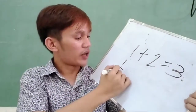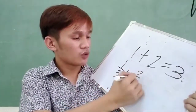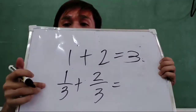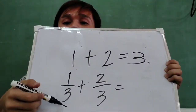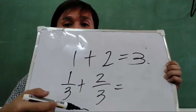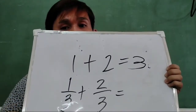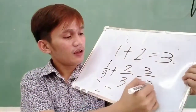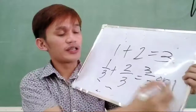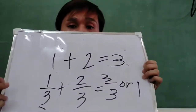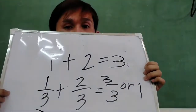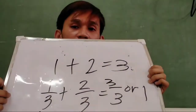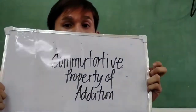So another example, we have 1 third plus 2 third. So 1 third is a rational number and 2 third is also a rational number. And if we are going to add them, that will be 3 over 3 or simply 1. And 1 is a rational number. So let us now proceed to the next property, which is the commutative property of addition.